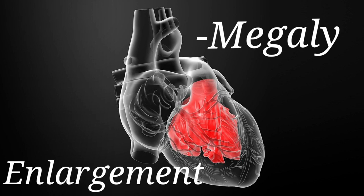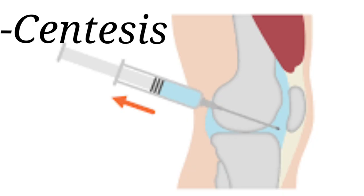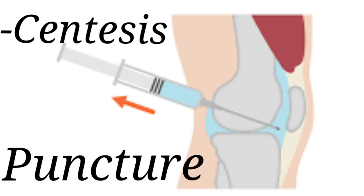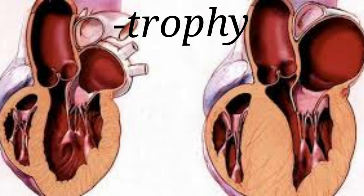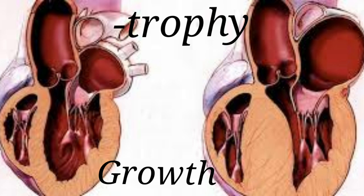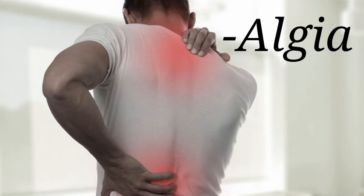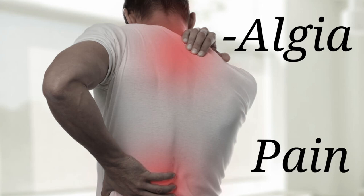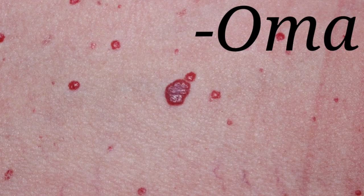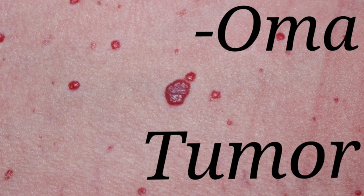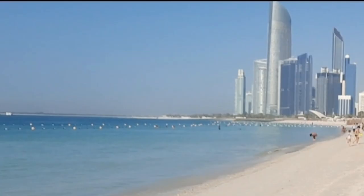It means enlargement of the heart. Second question: what does the suffix '-centesis' in arthrocentesis mean? Correct. Next: what does the suffix '-trophy' in hypertrophy mean? Right. What does the suffix '-algia' in dorsalgia mean? Absolutely right. What does the suffix '-oma' in hemangioma mean? Wonderful — you all really did a great job, just like you did in the prefix section.